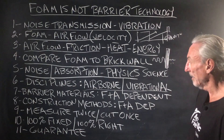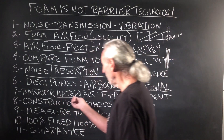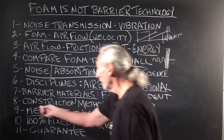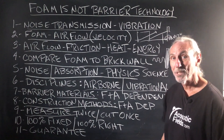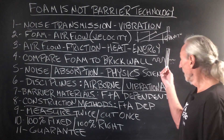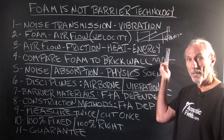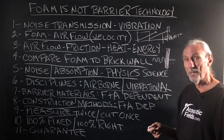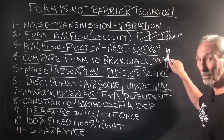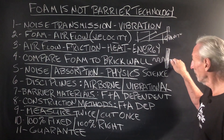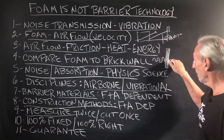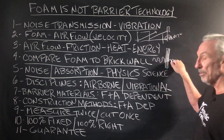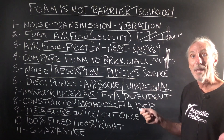The bottom line is we have to look at materials that are frequency and amplitude dependent. The construction methods are also frequency and amplitude dependent. Once we determine our materials based on the frequency and amplitude of our noise numbers, we have to determine how we're going to build it. If density is our variable, do we put the most dense layer toward the noise source, or on the room side — the worm side? That's all dependent on amplitude.